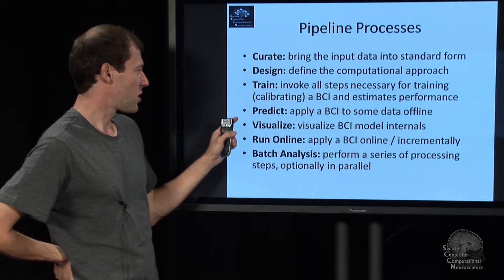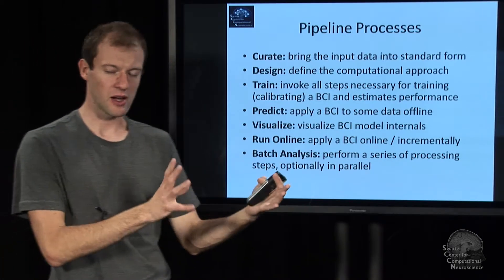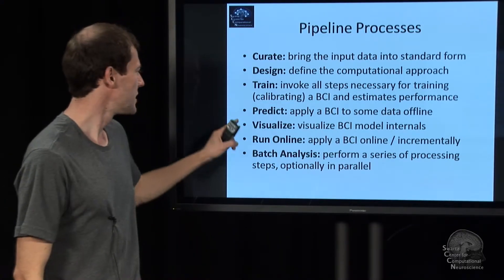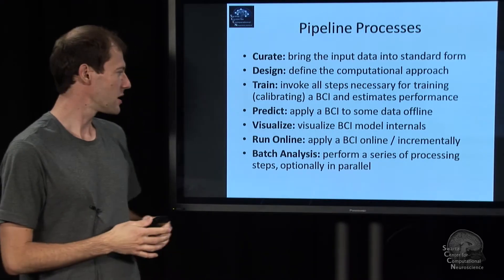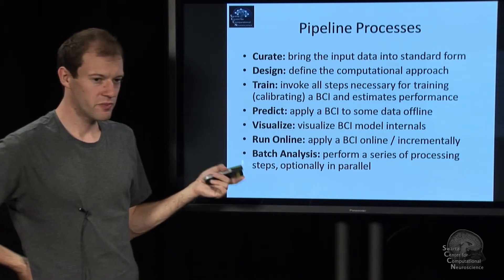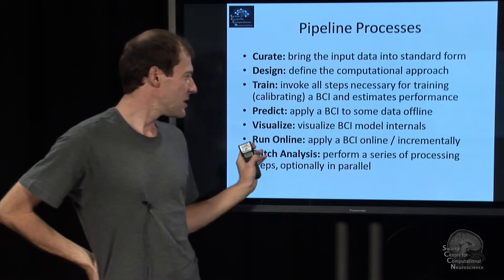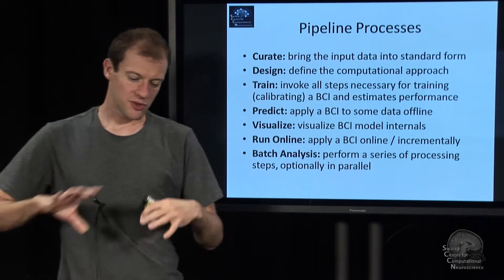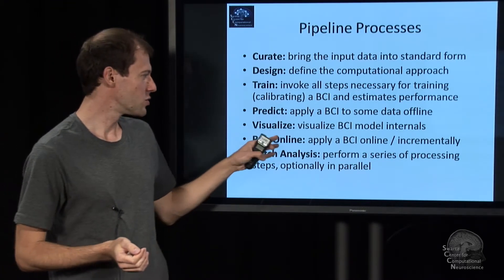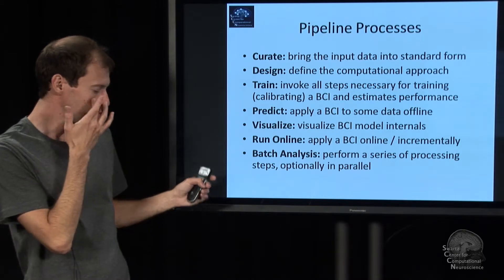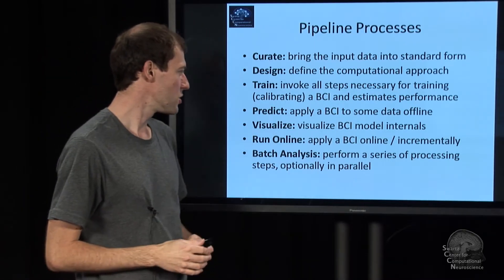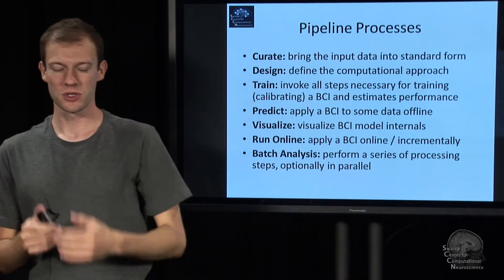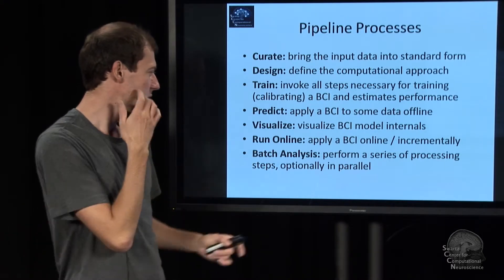The complementary step is predicting or estimating BCI outputs. You come with a new dataset and ask what the estimated labels are — you take the model, apply it, and that's the prediction step. You can essentially annotate the data with BCI outputs and visualize how your models are set up. Then perhaps the most important step for practical use is running things online after calibration. The most recent addition is batch analysis — running large-scale analysis of multiple methods, multiple datasets, and multiple computers with pretty much one function call.